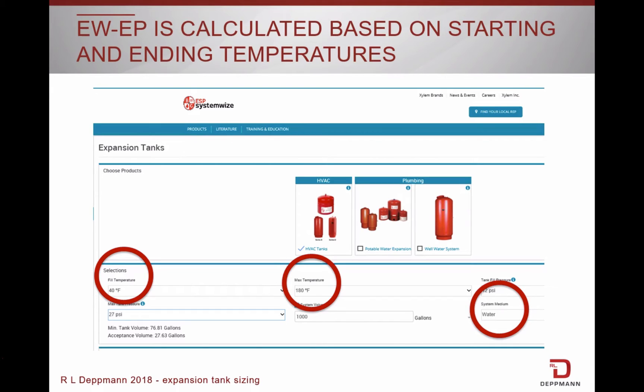Here is the screen from the Bell & Gossett ESP System-Wise Selection Program. As you can see, on the left is the system fill temperature, in the middle is the maximum temperature, and on the right is the liquid we are using. Expansion of the water (EW) minus the expansion of the pipe (EP) is calculated based on the fill temperature, maximum temperatures, and the liquid.